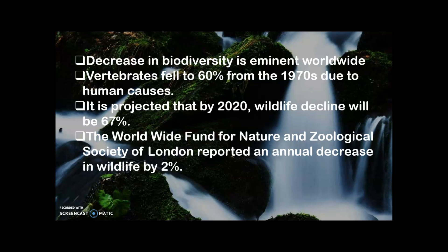Taxonomy is a system devised by Swedish scientist Carolus Linnaeus, still used in the biological sciences today. It is the hierarchical system of classifying and naming organisms. The system commonly used today shows that living organisms in the world are so diverse, yet they still share many traits.